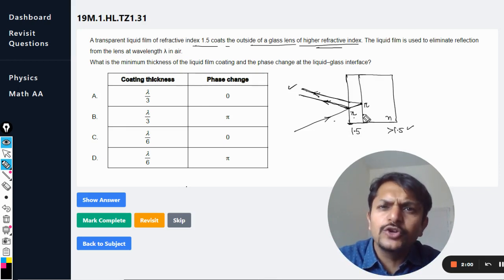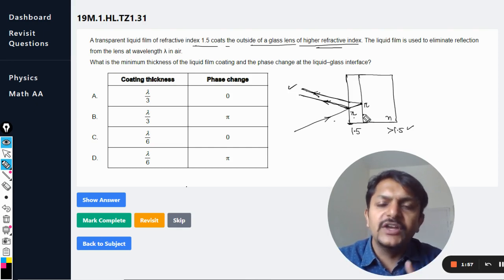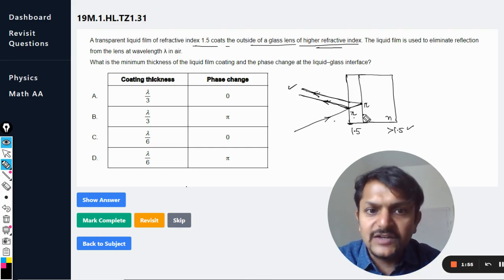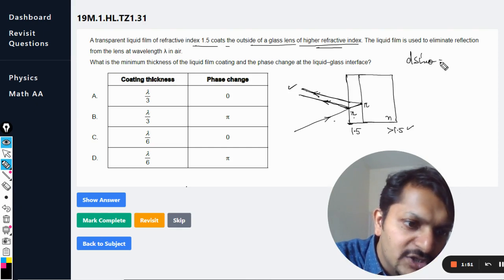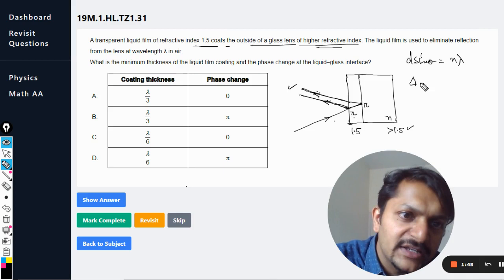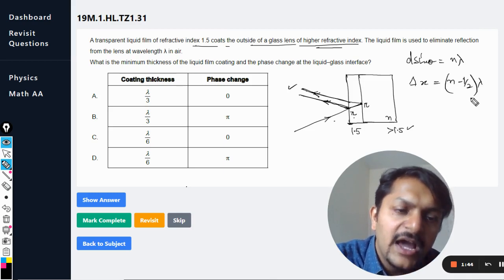So it means we are just going to use the simple formulas of the difference of the interference. Like for constructive interference, the path difference should be equal to n lambda. And here the path difference for destructive interference should be equal to (n - 1/2) lambda.